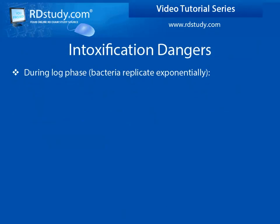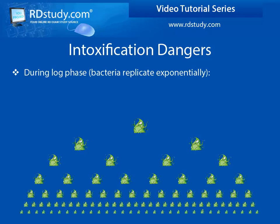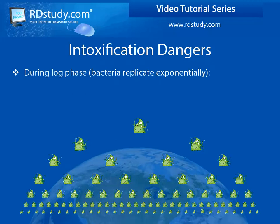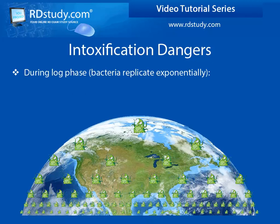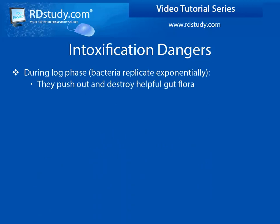When bacteria are in the log phase, they replicate at an exponential rate, doubling in quantity within a certain amount of time. Some bacteria, such as E. coli, can double every 20 minutes. If there were no limitations to this phase, the Earth would be covered in E. coli in under 36 hours. Such rapid expansion can have the effect of pushing out or destroying any helpful or symbiotic bacteria in the gut.